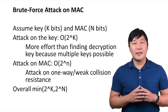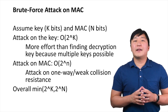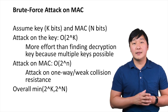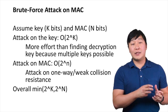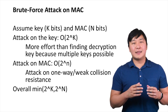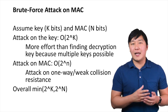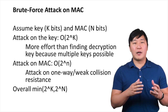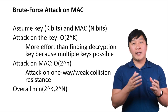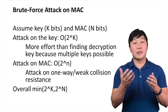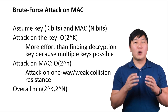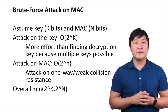On the other hand, the attacker can also attack the MAC to find a collision, so that the attacker can forge the MAC tag. Such effort is the same as finding a hash collision and on average requires 2 raised to the n minus 1, and the attacker effort grows in O of 2 to the nth power.